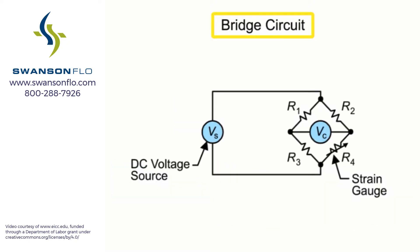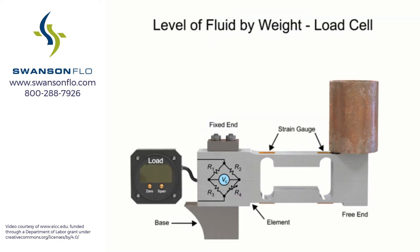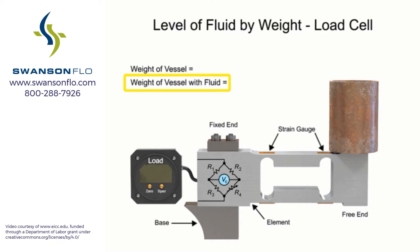Connected to a bridge circuit, the force measured is proportional to the output voltage. The output voltage is converted to a level measurement when vessel weight and vessel fluid density is known.